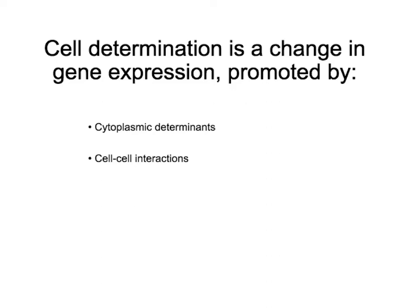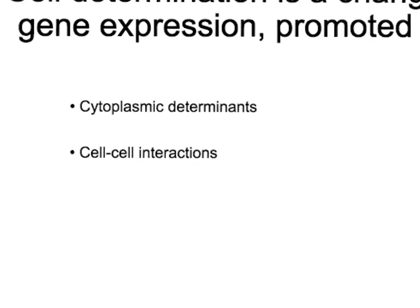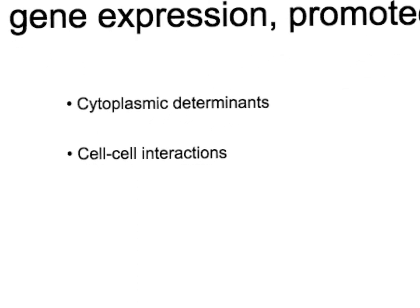Now we're going to talk about the process by which cells become determined to a specific path. Cell determination is the process of changing the gene expression of that cell, and this happens either by having cytoplasmic determinants or by interactions between neighboring cells.